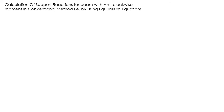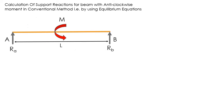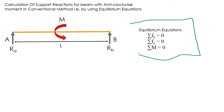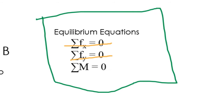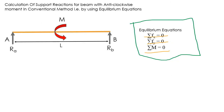Now, calculation of support reactions for a beam with an anti-clockwise moment using the conventional method — that is, by using the equilibrium conditions and equations. We use: summation of forces in X = 0, summation of forces in Y = 0, and summation of moments = 0.